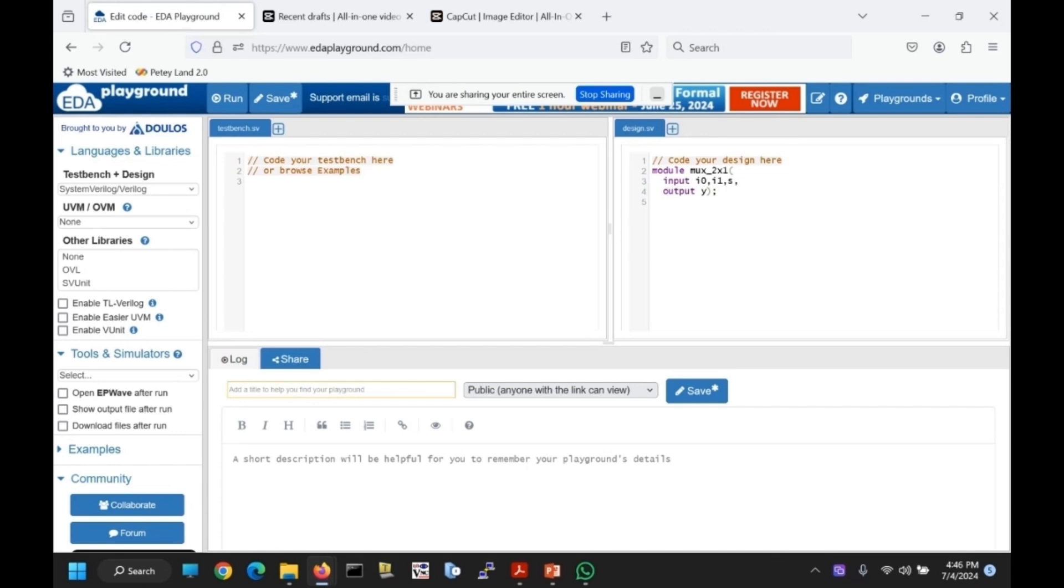Since this is a data flow style, one is supposed to use assign statement. Assign y is equal to, I1, I0. Here I am using a ternary operator for the output y.